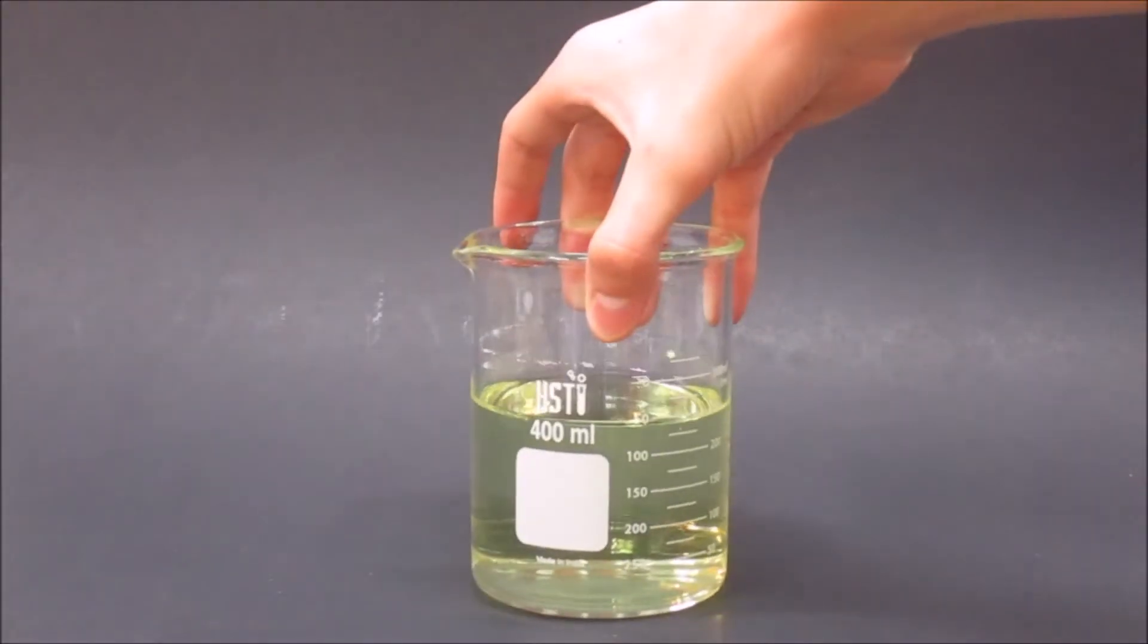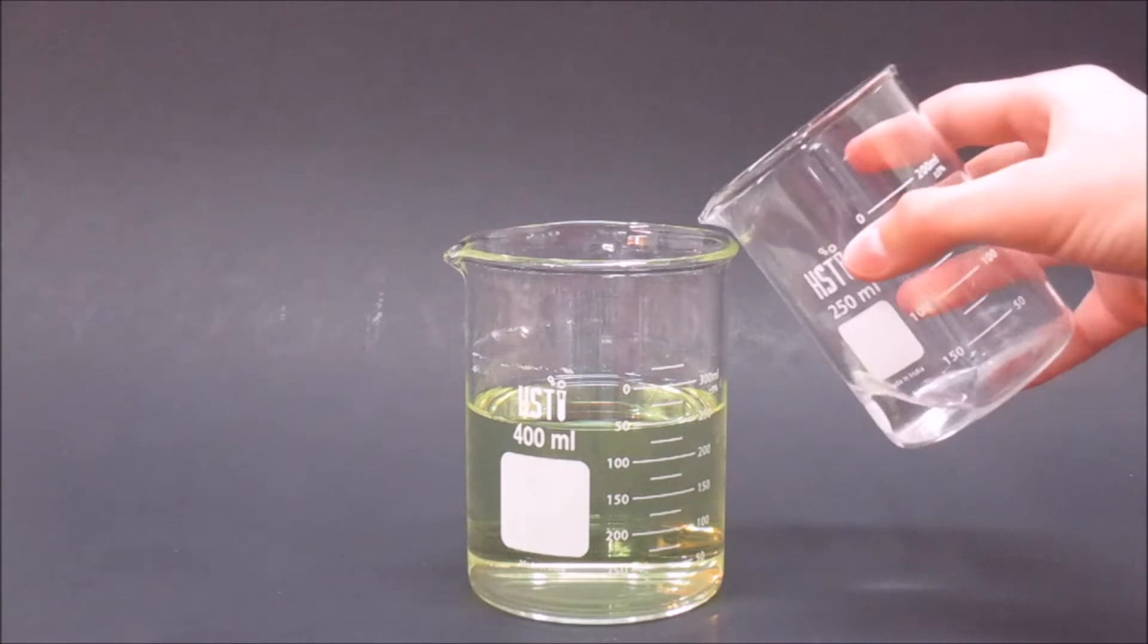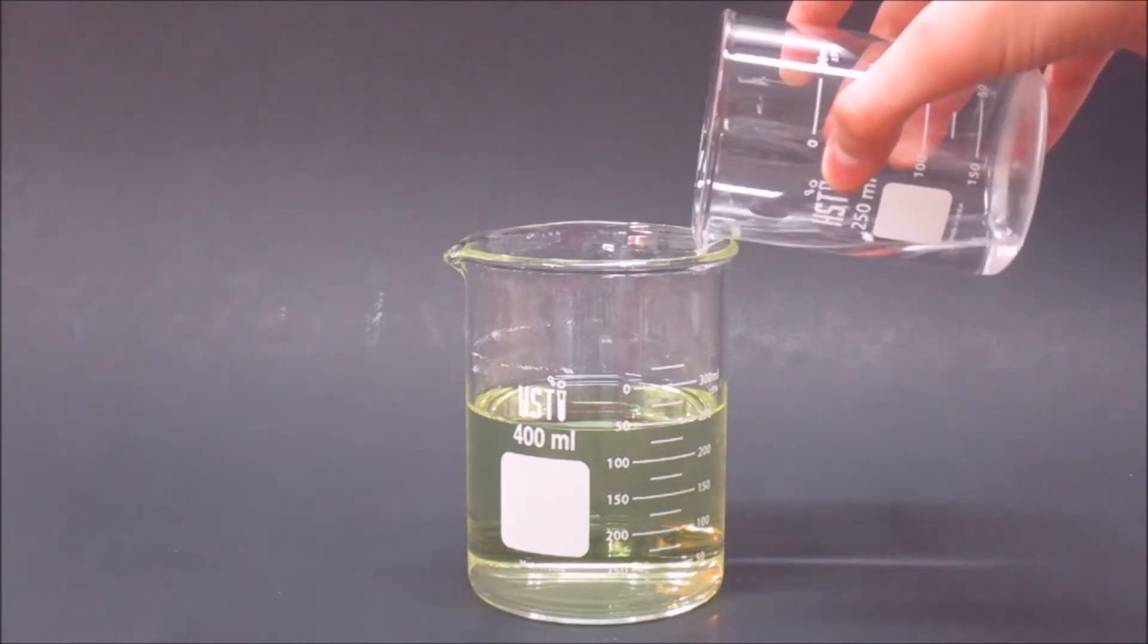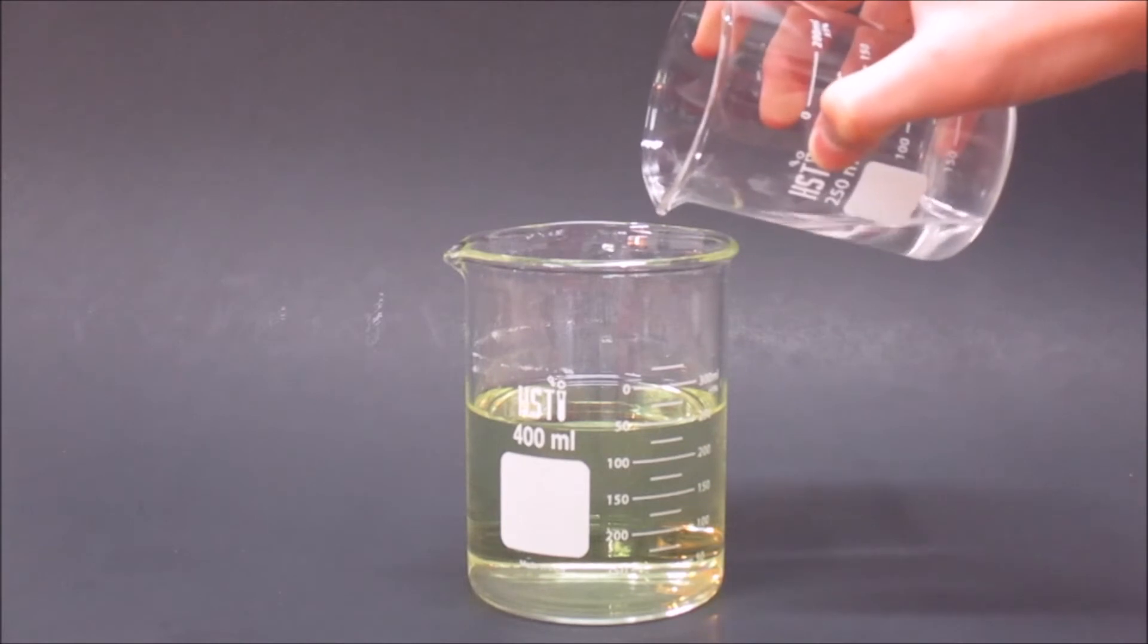I put the beaker with the bleach in the center, and then I poured the acetone into the bleach. I did this slowly so the reaction would not get out of hand.